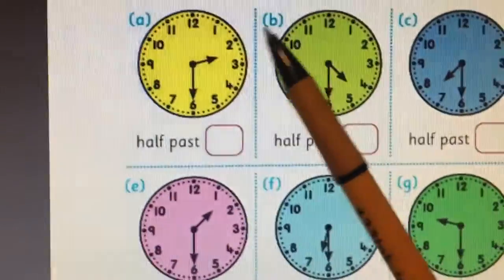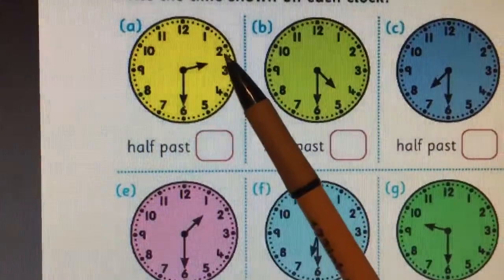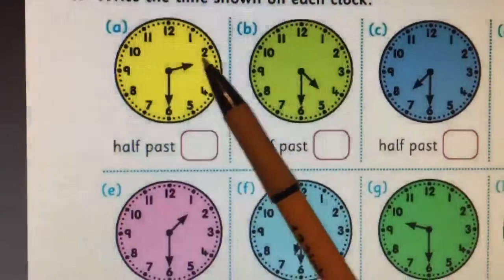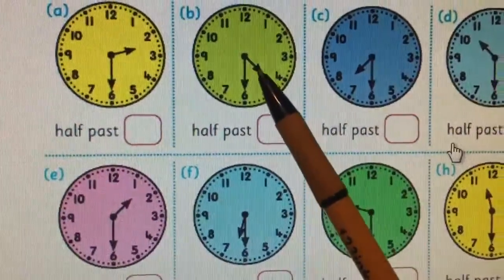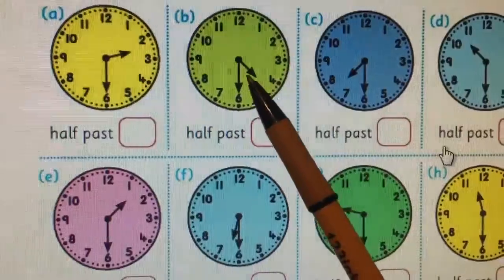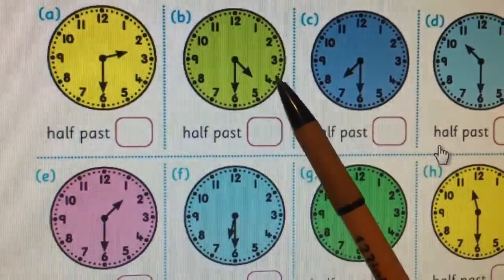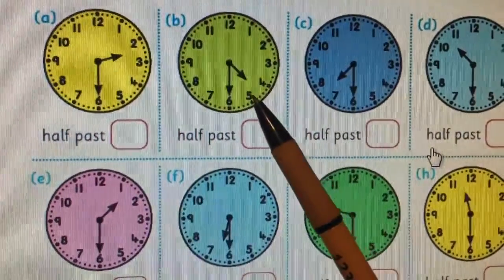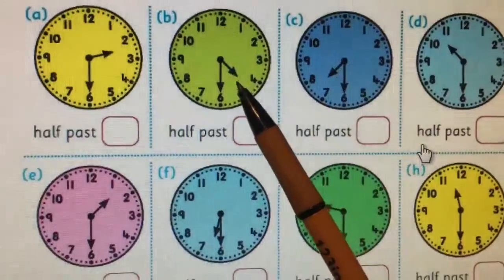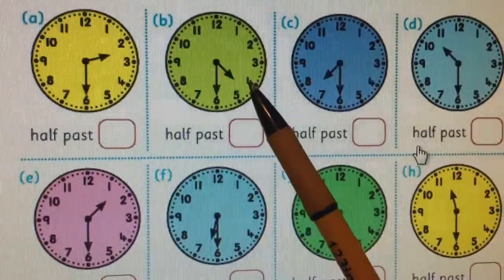Can you notice that between two and three, that's where the small hand is pointing? Here it's half past four. The small hand is pointing in between because it's 30 minutes past four, halfway between the hour four and five.